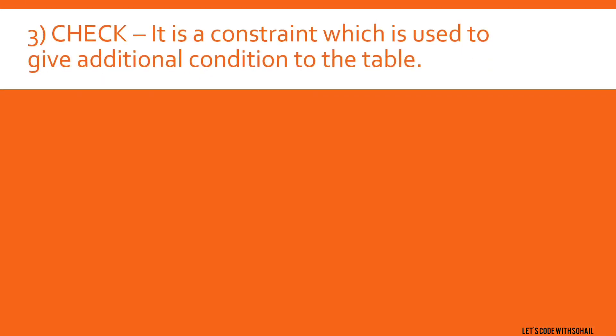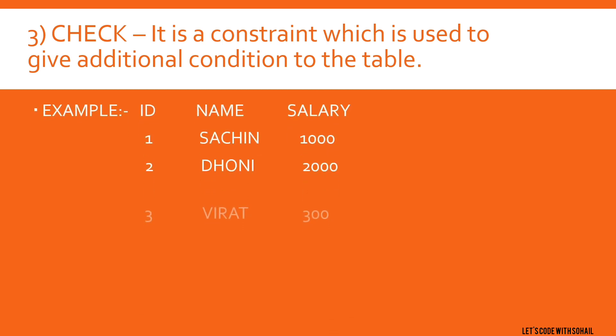Next is Check. It is a constraint which is used to give an additional condition to the table. Check is also a constraint and it is used to give some additional condition to the table. For example, let us take a table.